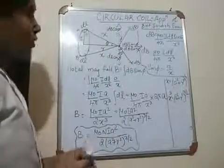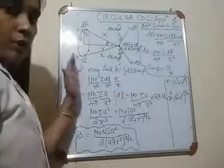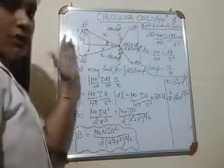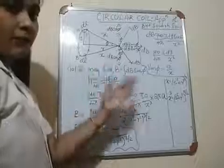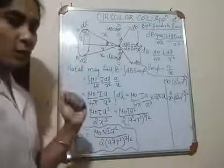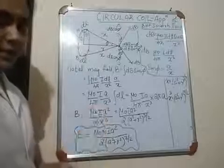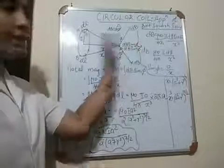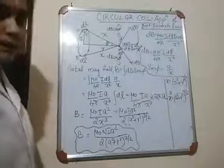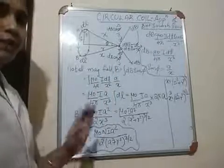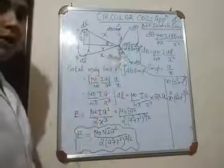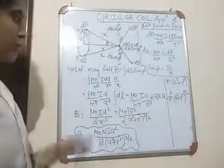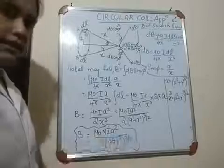There will be contribution only from the horizontal components, that means DB·sinφ. The total magnetic field due to the whole circular coil is obtained by adding DB·sinφ of all the segments. To add the magnetic field produced due to all segments is a very tedious process, so we go for an integration process. The total magnetic field at point P is obtained by integrating DB·sinφ. So B equals integral of DB·sinφ.